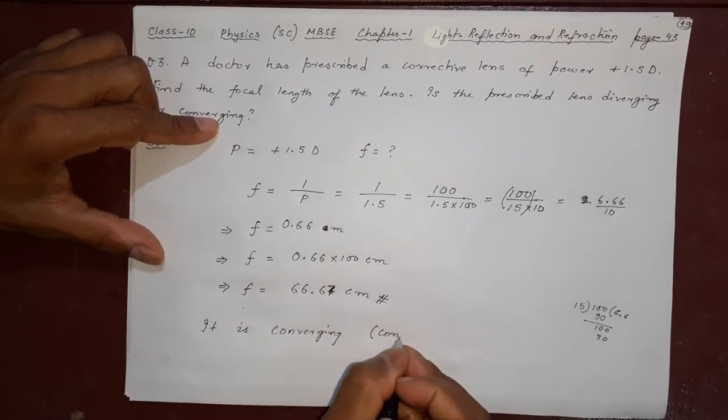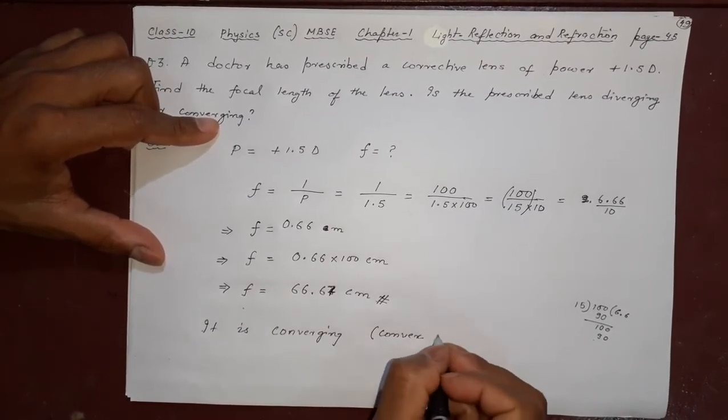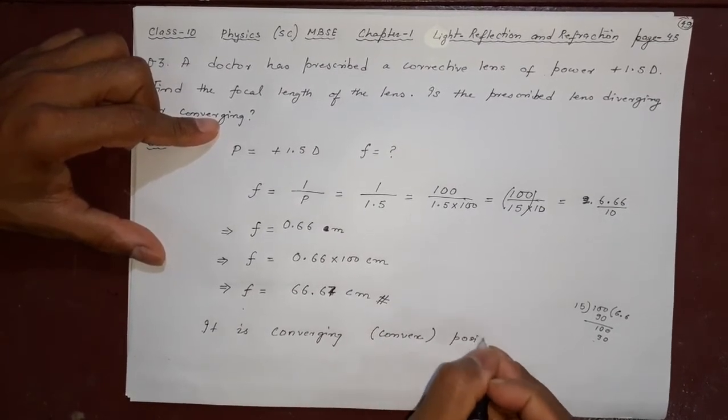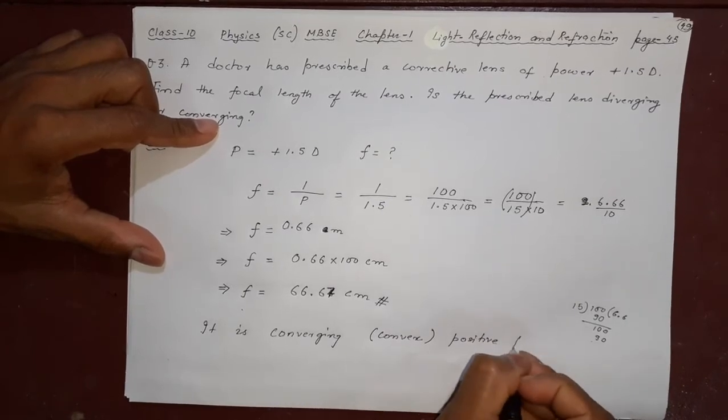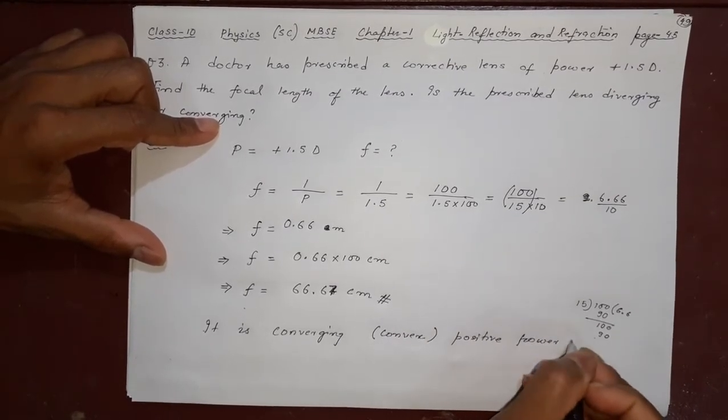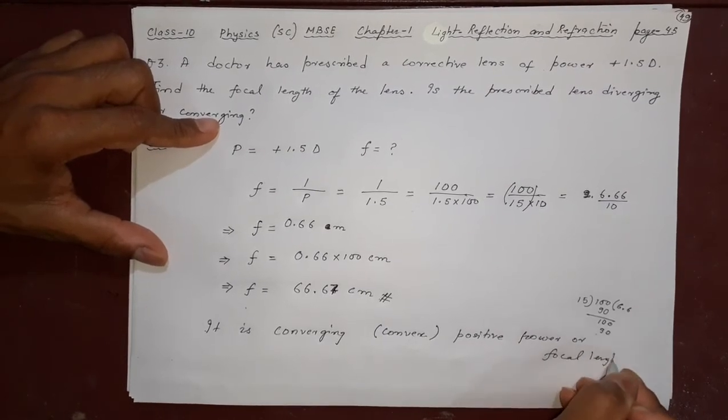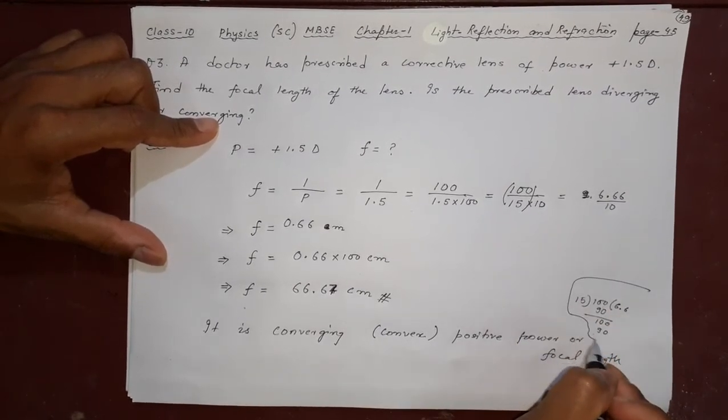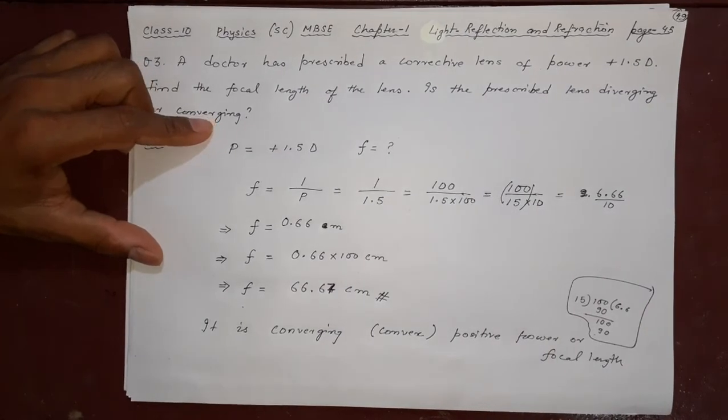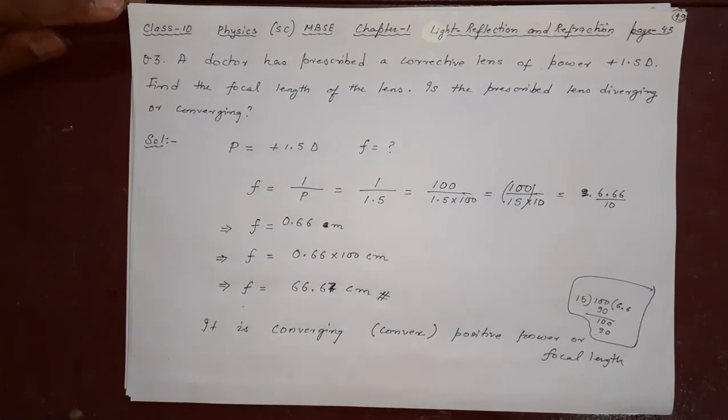Why converging? Because it is a convex lens. Why convex? Because it has positive power or even from the focal length also. That is the answer. Clear?